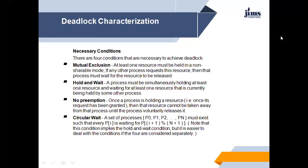The fourth condition is called circular wait. There must exist a set of waiting processes P0, P1, ..., Pn such that P0 is waiting for a resource held by P1, P1 is waiting for a resource held by P2, and so on; Pn-1 is waiting for a resource held by Pn, and Pn is waiting for a resource held by P0. So P0 waits for P1, P1 waits for P2, P2 waits for P3, and Pn waits for P0 — forming a circular wait. These are the four conditions necessary to achieve deadlock: mutual exclusion, hold and wait, no preemption, and circular wait.